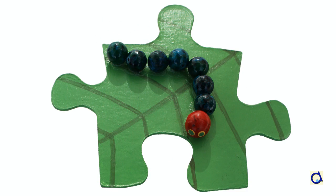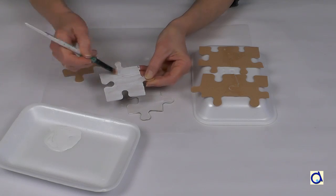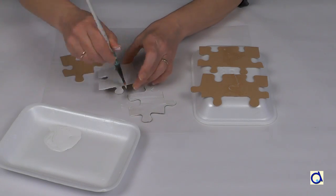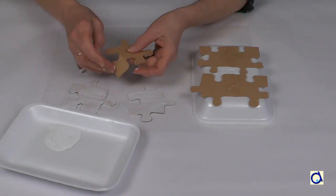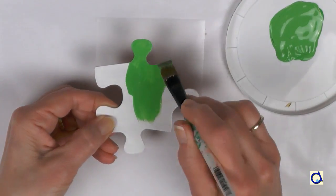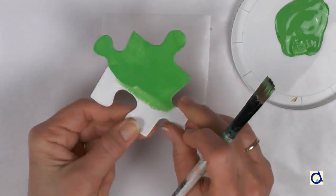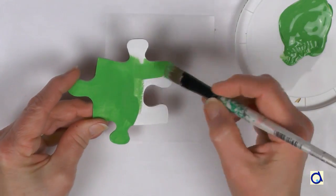Now I am going to show you another magnet model. Again, take the back of the puzzle piece and paint it white to make it a good base for any color. I chose to turn this puzzle piece into a leaf eaten by a caterpillar. My inspiration for this magnet is the story of the very hungry caterpillar.